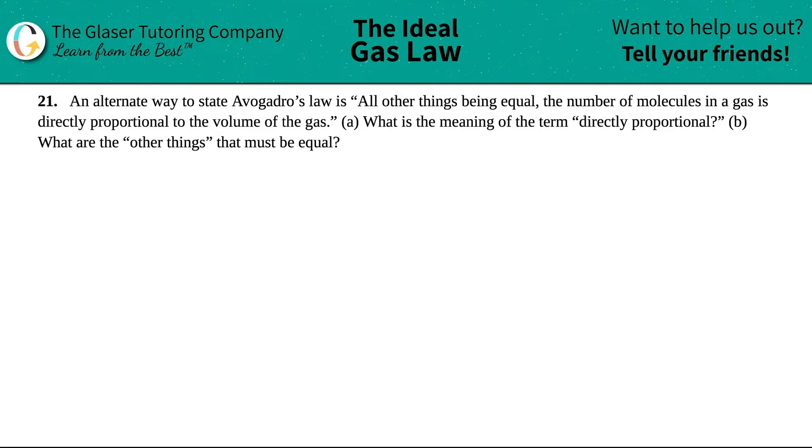Number 21. An alternate way to state Avogadro's law is all things being equal, the number of molecules in a gas is directly proportional to the volume of the gas. And then we have letter A: What is the meaning of the term directly proportional? And letter B, what are the other things that must be equal?